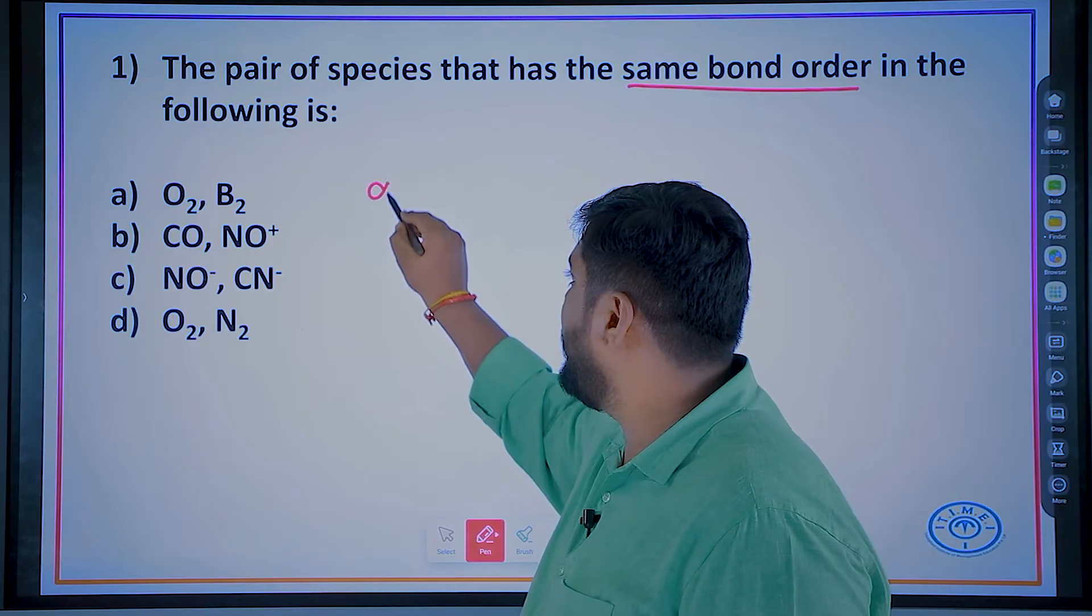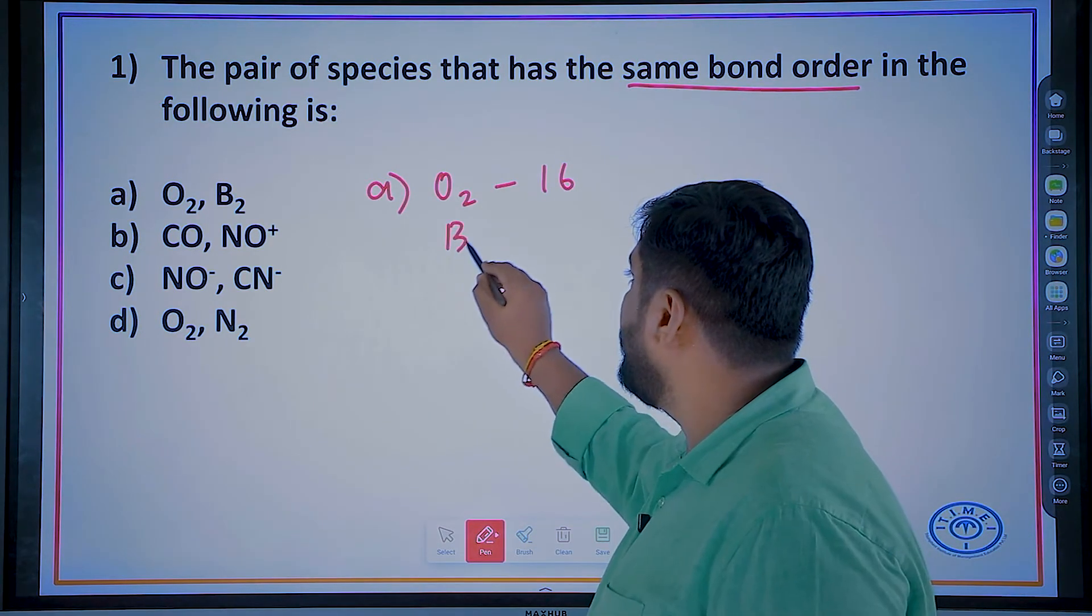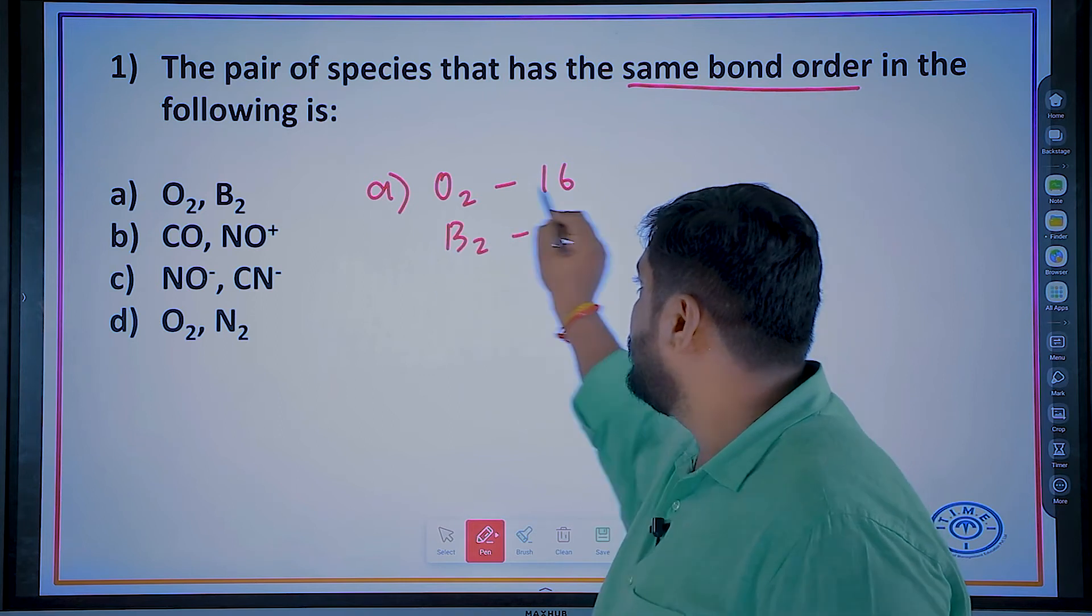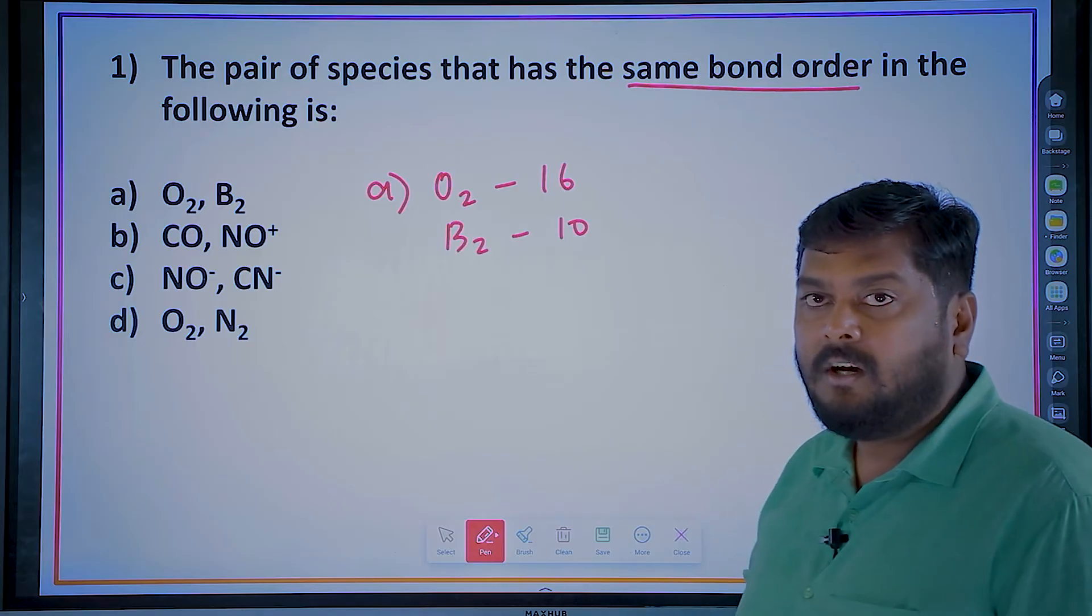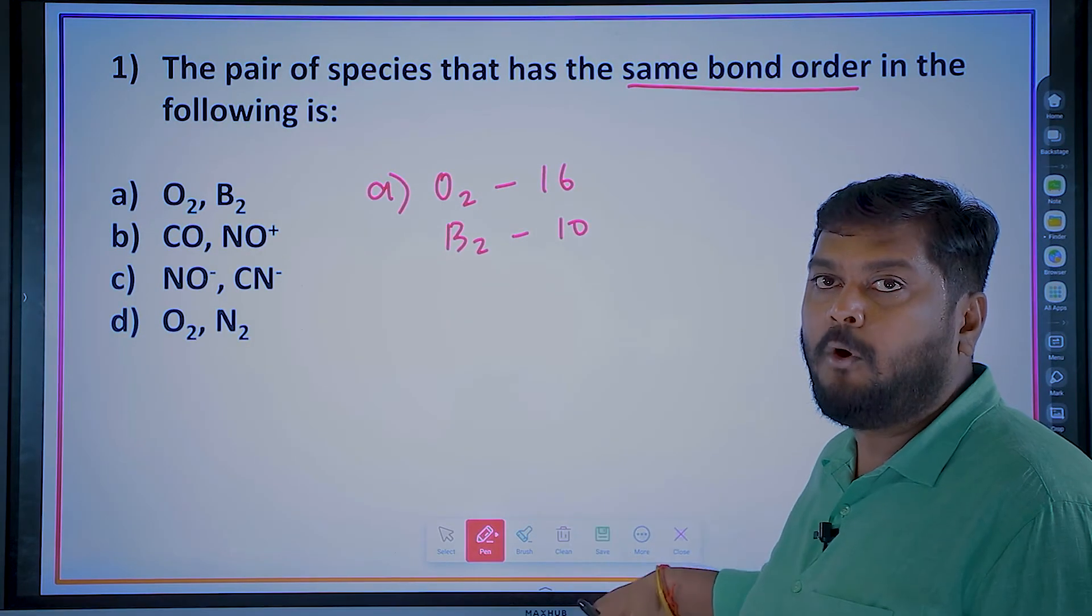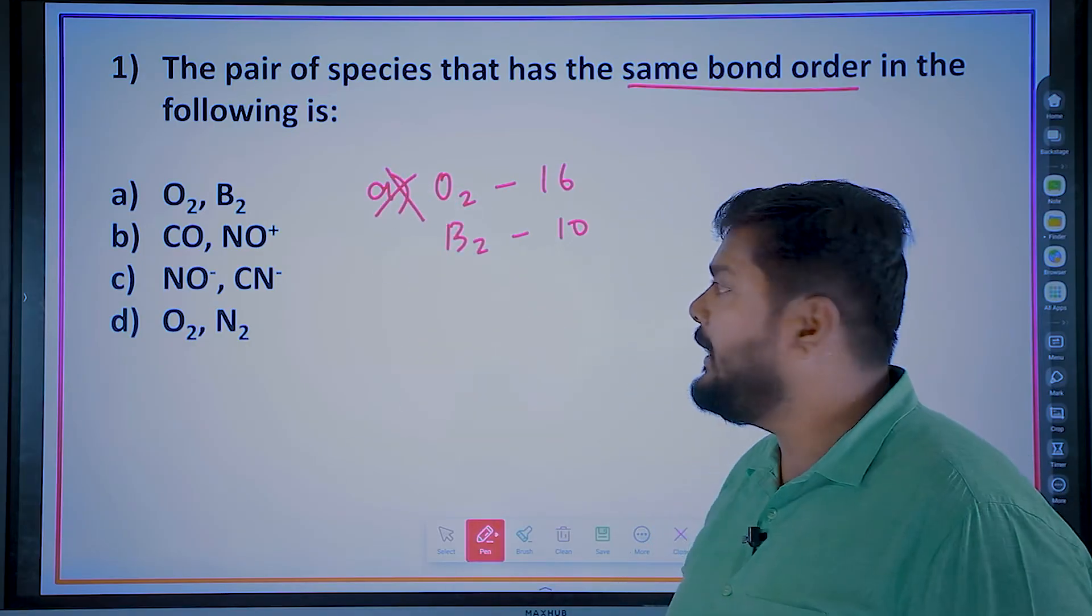Option A: O2, O2 has 16 electrons and B2, B2 has 10 electrons. So it does not have same number of electrons. Already I told you, 14 electrons has 3 bond order and then 12 has 2. So this won't be.